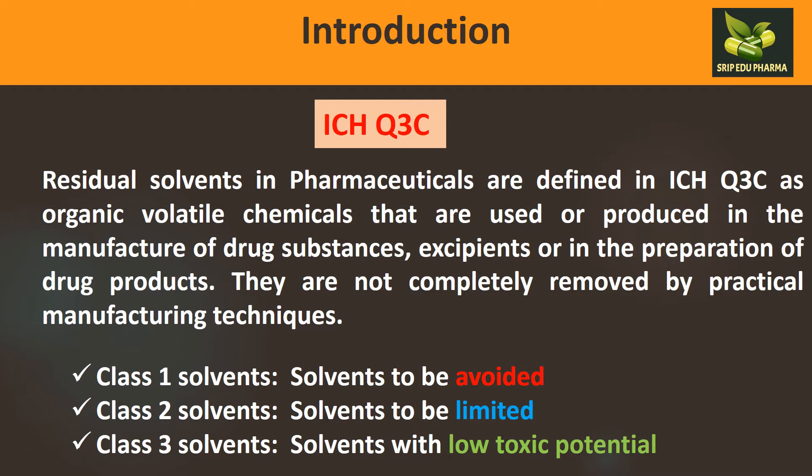Since they are not completely removed, their limits should be known. For ease of use, ICH Q3C guidelines have categorized solvents into three categories: Class 1, Class 2, and Class 3. Class 1 solvents are the most toxic and are to be avoided. Class 2 have less toxicity but are still toxic, so their quantity should be limited. Class 3 solvents have very low toxic potential and can be widely used, though a maximum limit still applies.